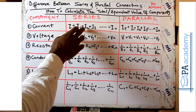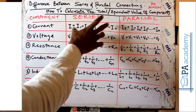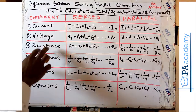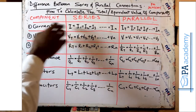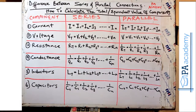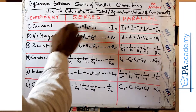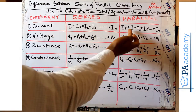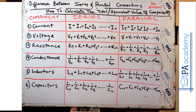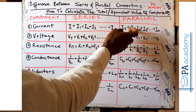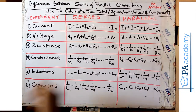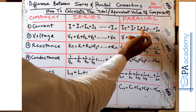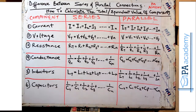What this tells us is that in a series connection, the same current flows through all the components. But in a parallel connection, the currents are not the same across all components. To get the equivalent total current in a parallel connection, you add the value of each individual current.